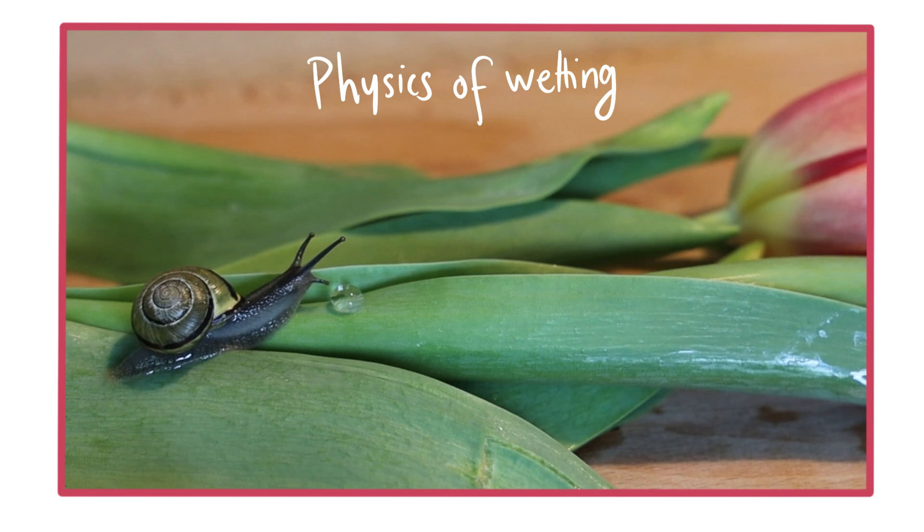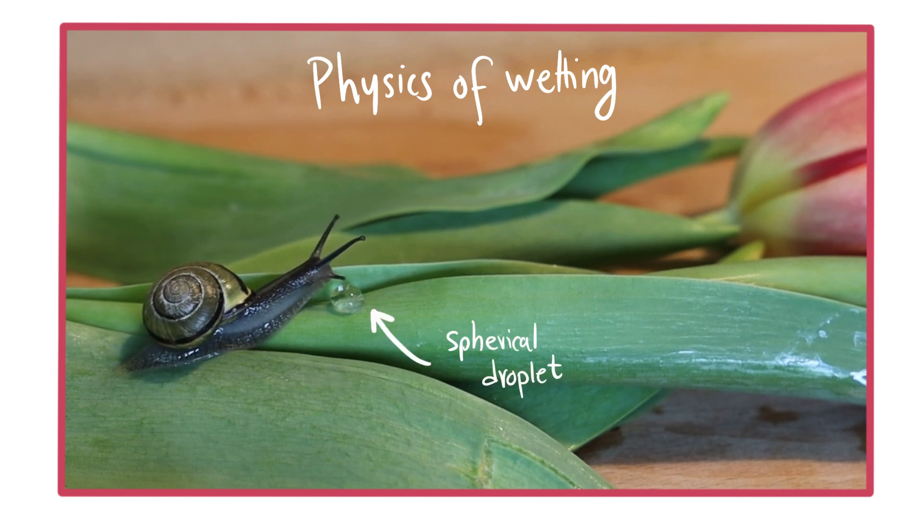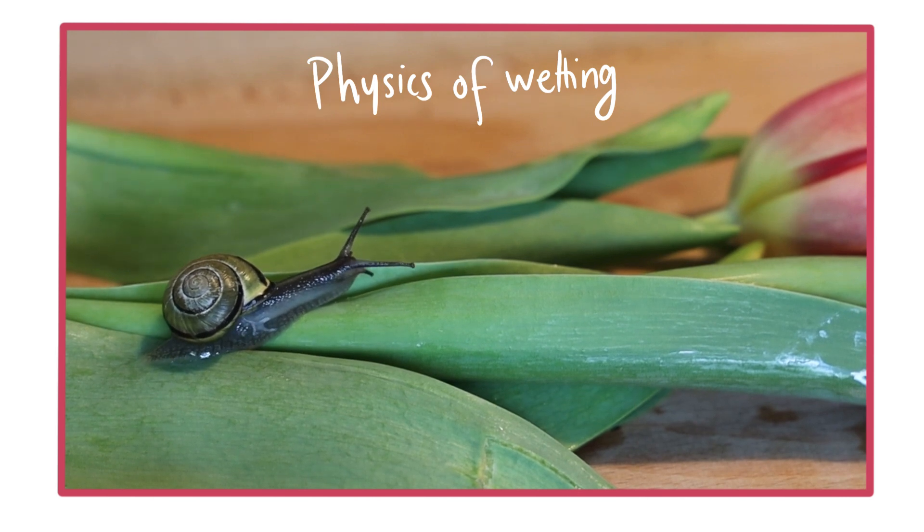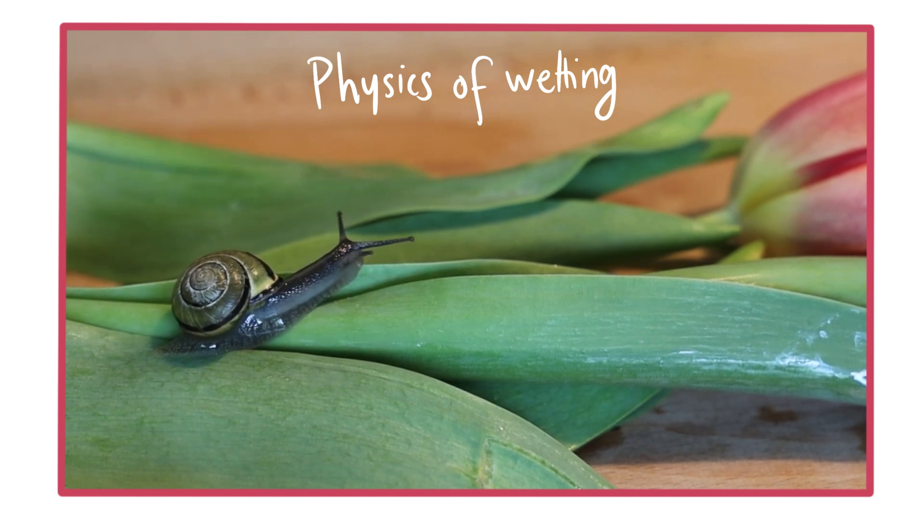Watch the physics of wetting in action. Water forms almost spherical droplets on the leaf, but it spreads and completely wets the skin of the snail. What makes water behave so differently on the two surfaces?